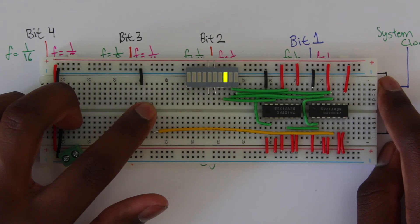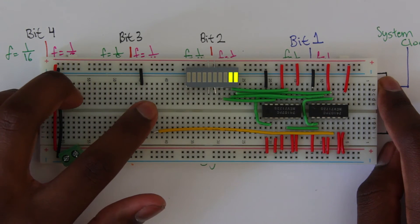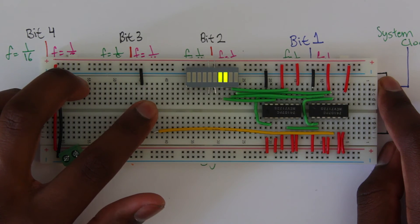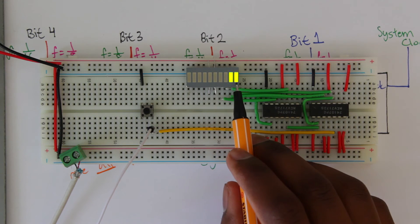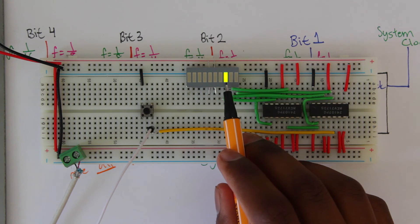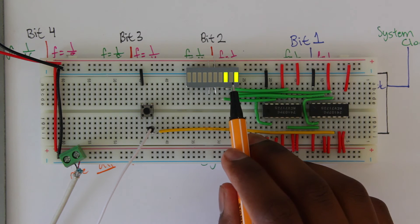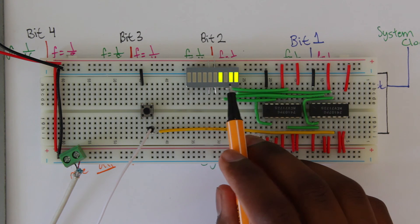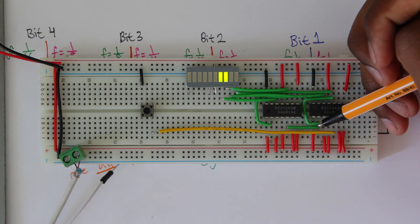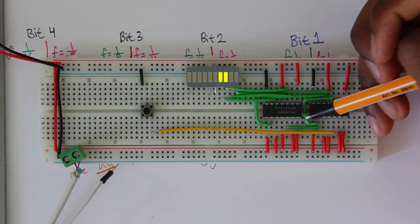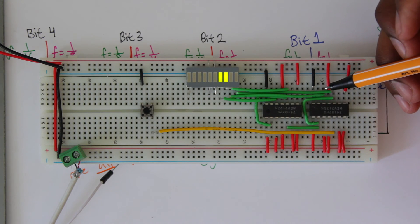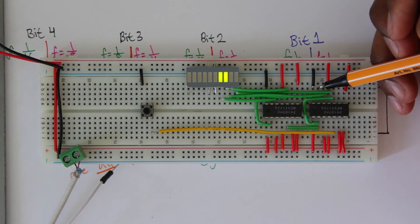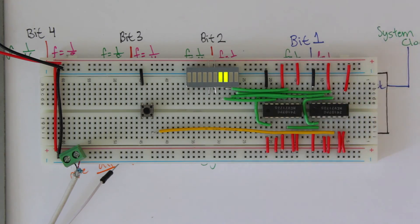Everything looks fine until we hit number five — something goes really wrong after that. Connecting a proper clock confirms it's not the switch: three, four, five, then it goes berserk. After about five minutes I found the problem: a wire is connecting the output of the first bit as the clock for the third bit instead of the second bit.